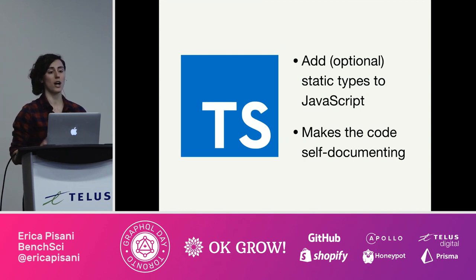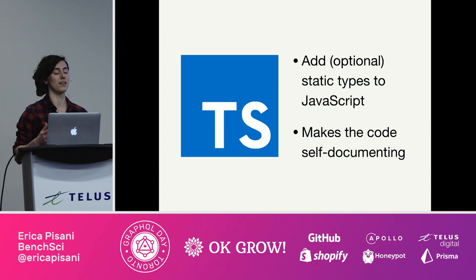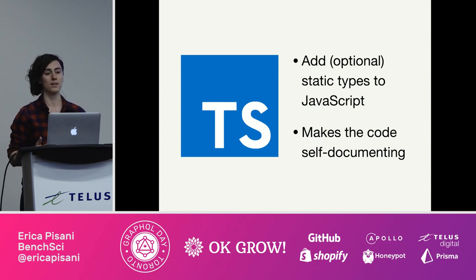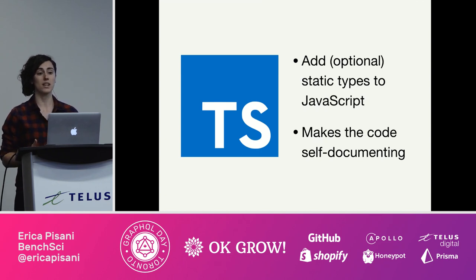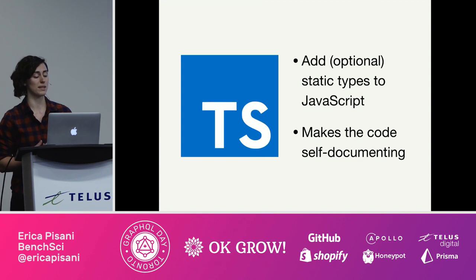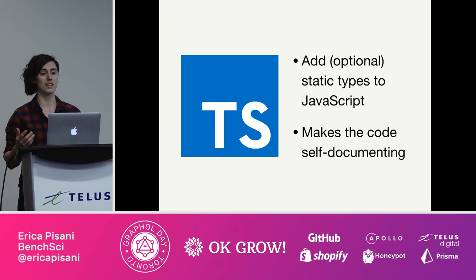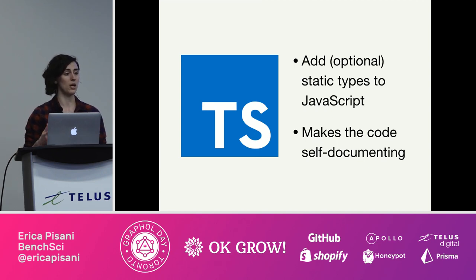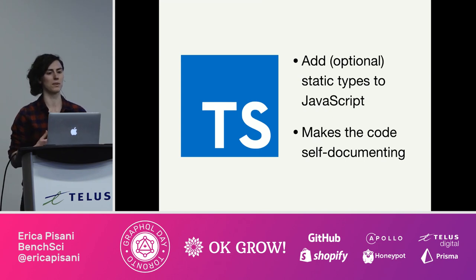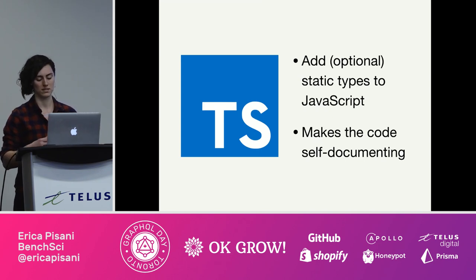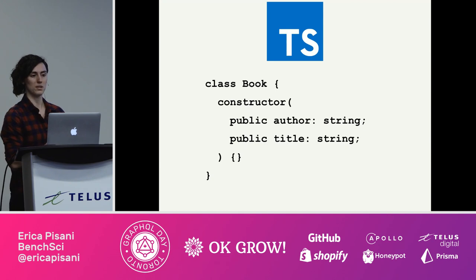And TypeScript — it adds optional static types to your JavaScript, helping you catch mismatched type errors throughout your code at compile time. What's really awesome about it is that it makes your code self-documenting. You get a better sense of data as it goes through your system without necessarily needing to be very familiar with the code base. So here's our book example again, but this time in TypeScript.